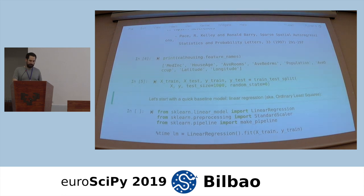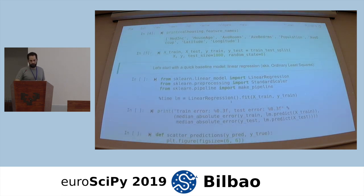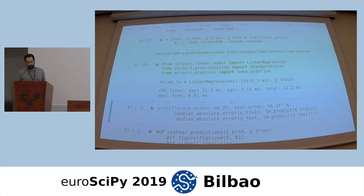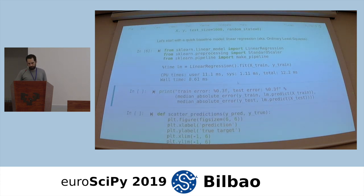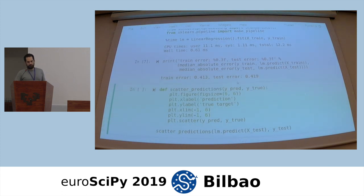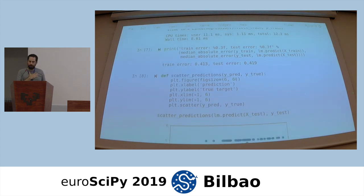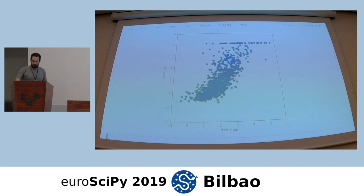We can split our dataset into a training and test set at random, keeping 1,000 data points for evaluation. We'll start with some baselines. The simplest baseline is ordinary least squares. If you do that in Scikit-learn, it's very fast — 8 milliseconds to fit. You can compute the median absolute error, and you see 0.4-something on the test set and approximately the same on the training set, which means the model is completely underfitting — it's not powerful enough.